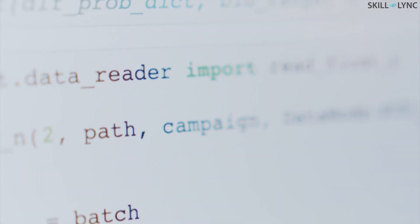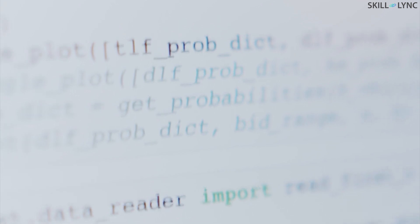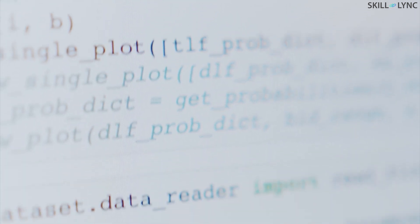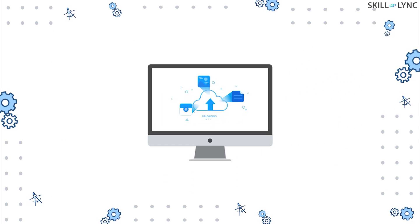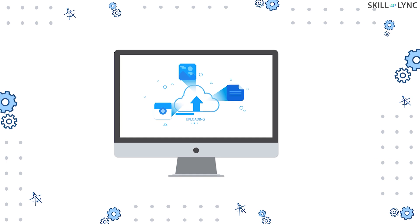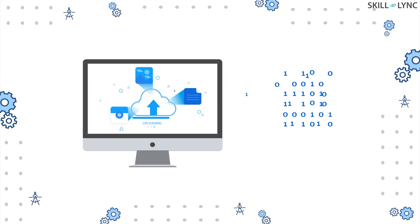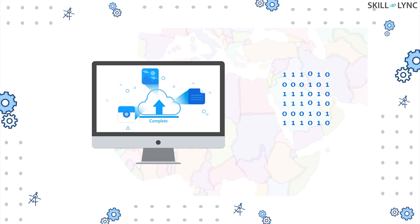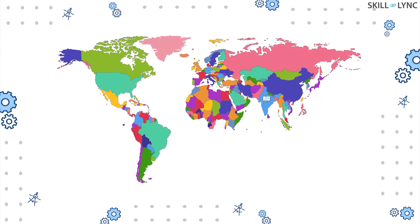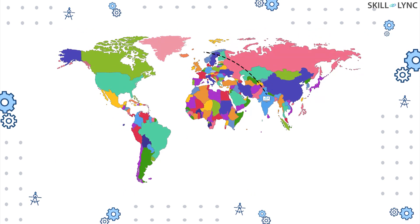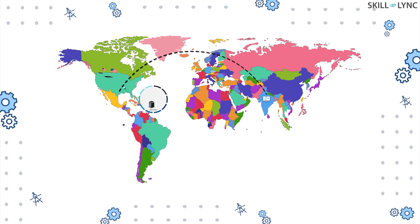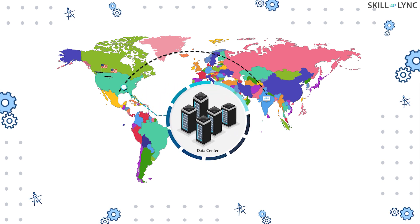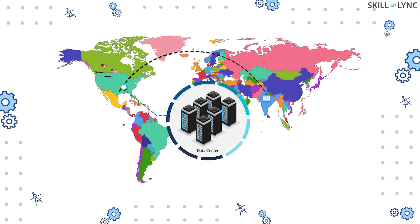Well, we did too and decided to sit with this global network to understand how it gets us the information that we want. Let's say you upload a video on YouTube. First, this file gets converted into packets of data in the form of ones and zeros. After this, the uploaded file gets stored in data centers like all other different files with a unique code. Since it's YouTube, the data is most probably stored in Google data modular centers.